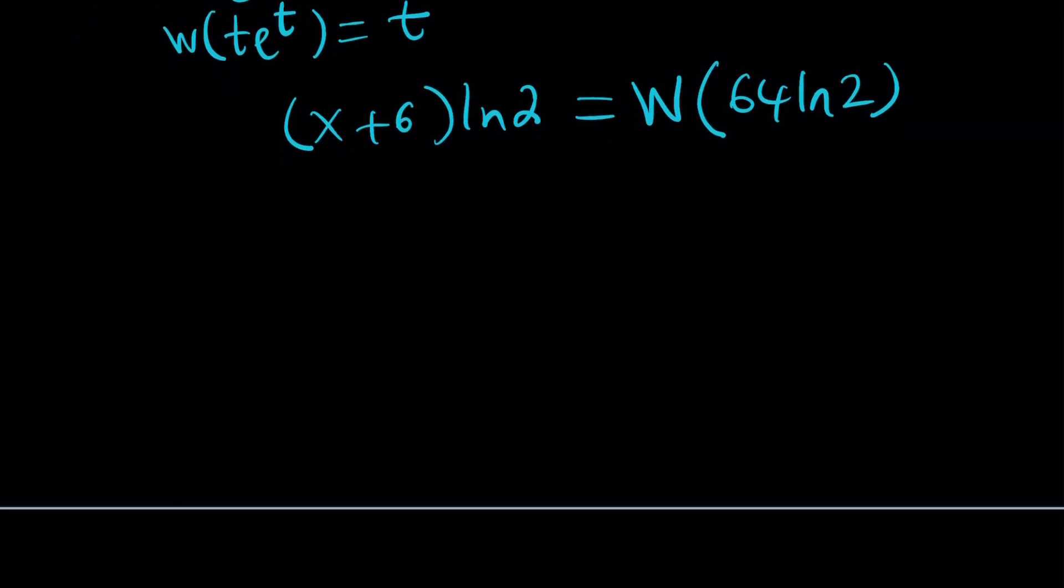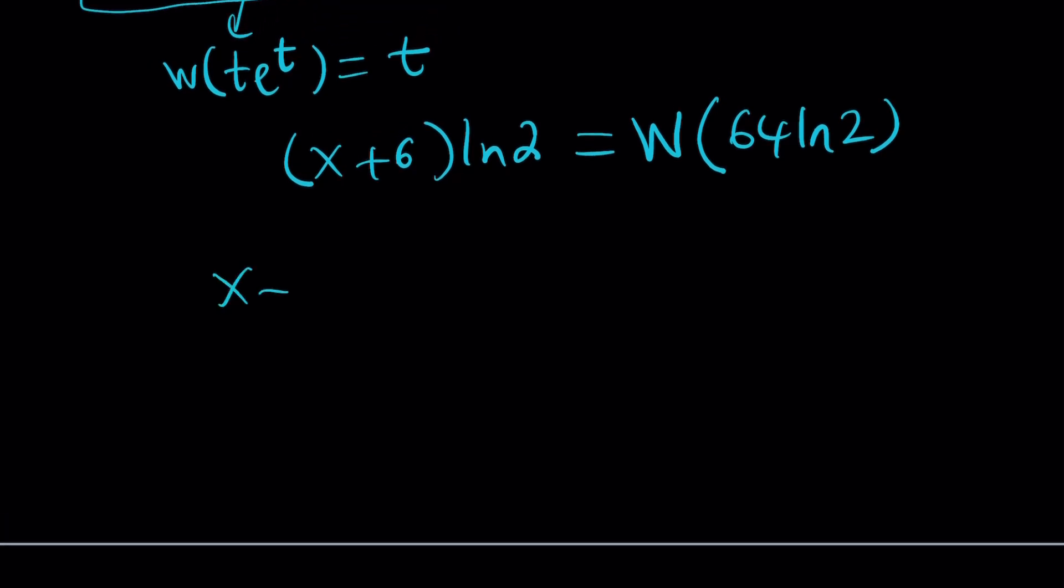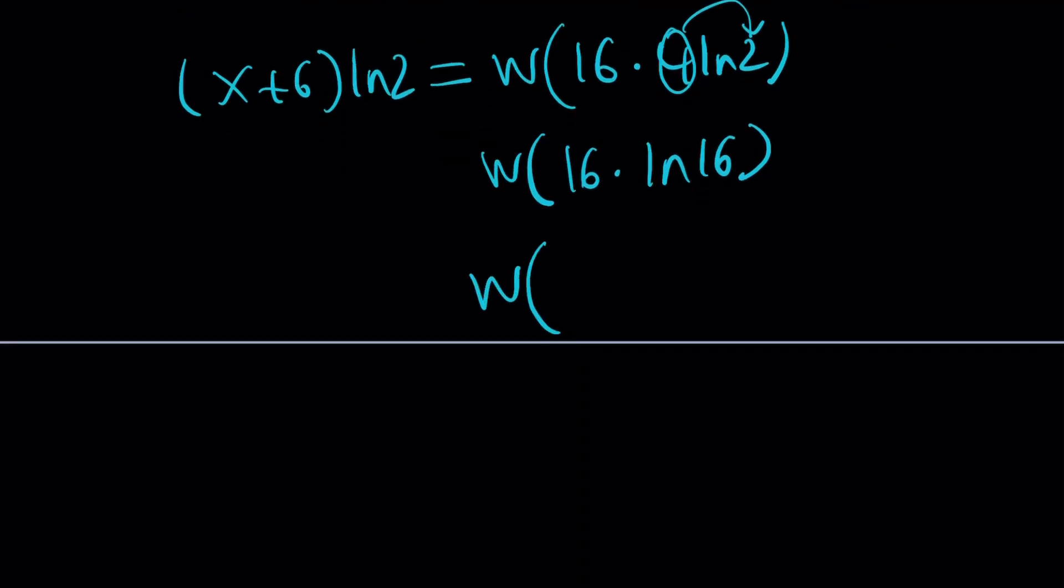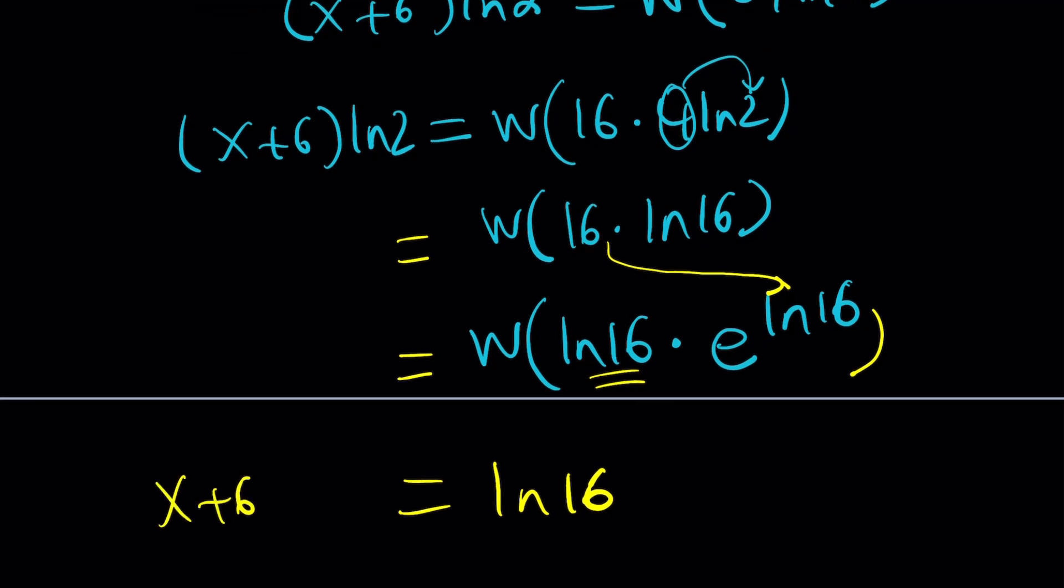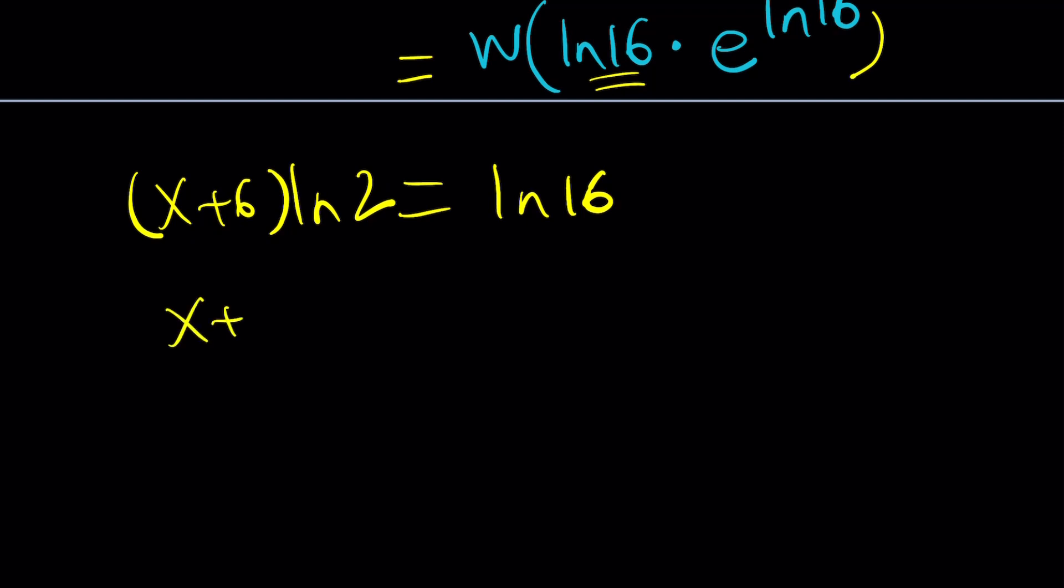Now, I got my x plus 6 on the left-hand side. Let's go ahead and simplify the right-hand side by writing w 64 ln 2 as w 16 times 4 times ln 2. And then now this is going to become 2 to the power 4, which is 16. So it's going to be 16 times ln 16. And then finally, I can write this as ln 16 times e to the power ln 16, because that's what 16 can be written as. That's the thing we used here, a little trick. And if you apply Lambert's w to that, you're going to get what back? This t, which is ln 16. And on the left-hand side, we have x plus 6 times ln 2. Now, here is the fun part. We're almost done.